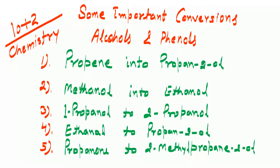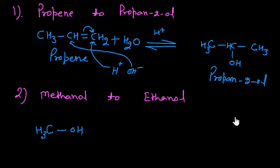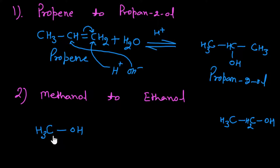Next, let's take methanol to ethanol. First of all, we need to draw the structure. Meth means one carbon, -ol means OH. We complete the hydrogen balance. This is methanol (CH₃OH). We need to make it two carbons — that is ethanol. We need to increase the carbon chain.